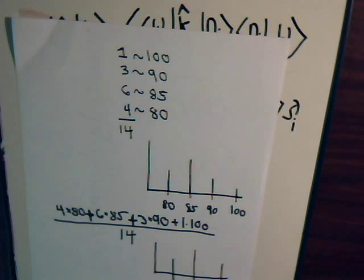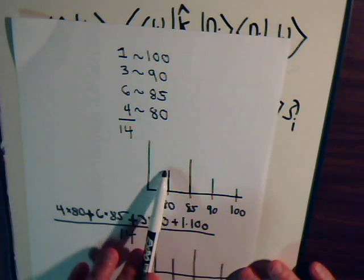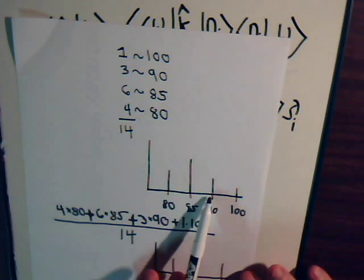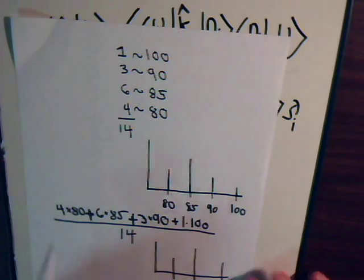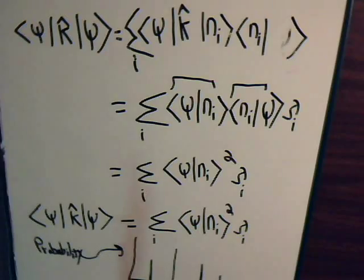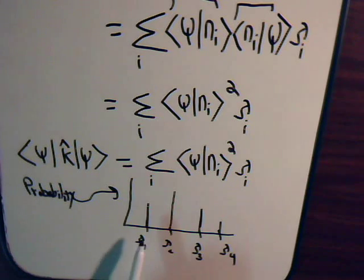And when we get the average, what do we do? We take the number of people that had a score of 80, 80 times 4, 85 times 6, 90 times 3, 100 times 1, that's that numerator. And that is what we're doing right here. Only here, of course, now we're dealing not with test scores, but with different eigenvalues, and the probability of a particular eigenvalue occurring. And a particular eigenvalue then corresponds to a particular measurement that we can take. So in quantum mechanics, that is what is meant by the expectation value.